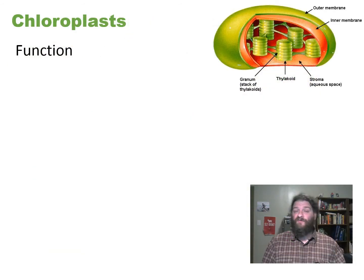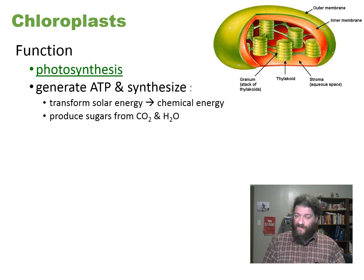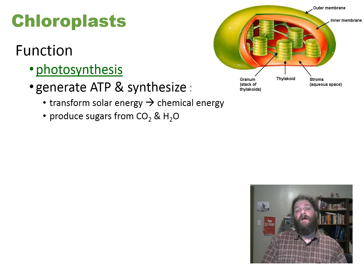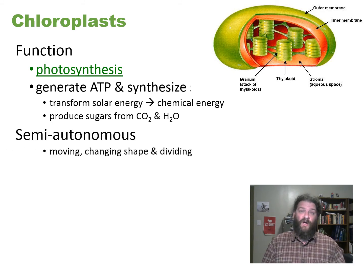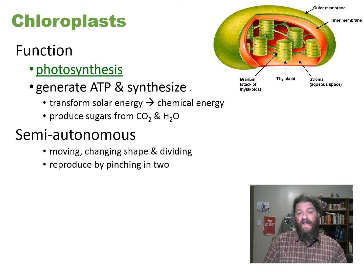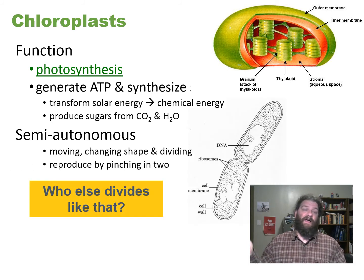Looking at chloroplasts from a more functional aspect — they're where photosynthesis takes place. They're going to generate ATP and transform solar energy into a usable form. They're going to make sugars, predominantly glucose, from carbon dioxide and water. Just like the mitochondria, they move, they divide, they have their own DNA — just like bacteria.